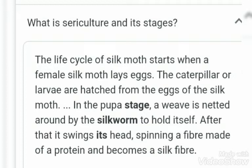We already have learned what sericulture is. Now we will learn about the stages of sericulture. The life cycle of the silk moth starts when a female silk moth lays eggs. The caterpillar or larvae are hatched from the eggs of the silk moth. In the pupa stage, a weave is netted around the silkworm to hold itself — meaning the silkworm will weave around itself, forming a kind of net that will change into the cocoon.